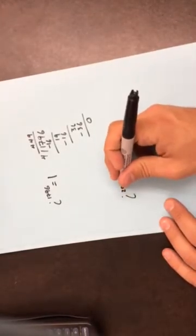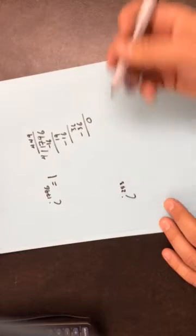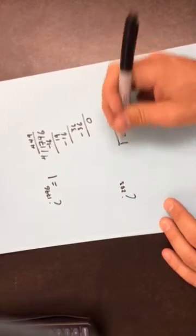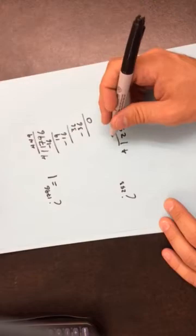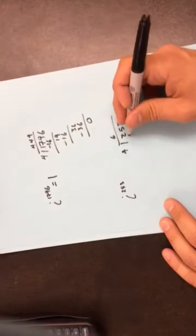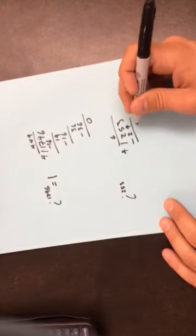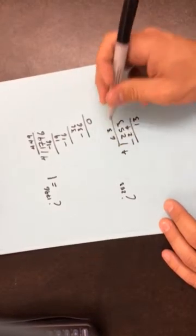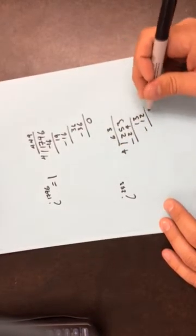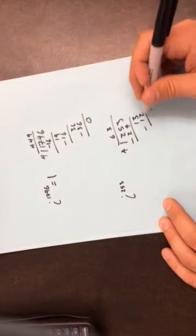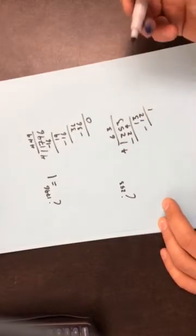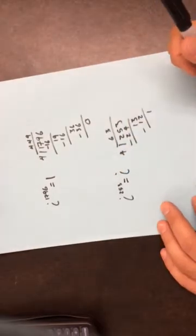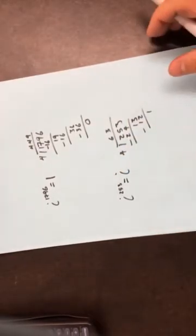Last one — same process. i to the 253: divide 253 by 4. 4 goes into 25 six times (remainder 1); bring down 3, goes in 3 times with remainder 1. So I have a remainder of 1. i to the power of 1 is just i, so i to the 253 equals i. That's the final solution.